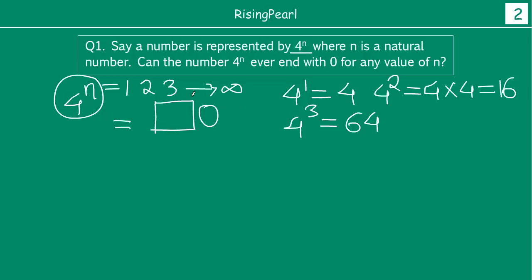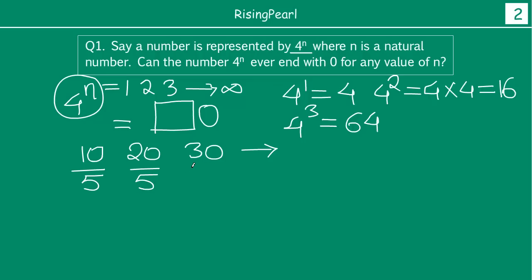If the number ends with 0 — something like 10, 20, or 30 — what jumps out at us? They are all divisible by 10, or they are all divisible by 5. And why 5 and not some other number? Because 5 is a prime number — that is why we are interested in 5. So if there is a value of n for which 4^n ends with 0, it means that number must be divisible by 5.